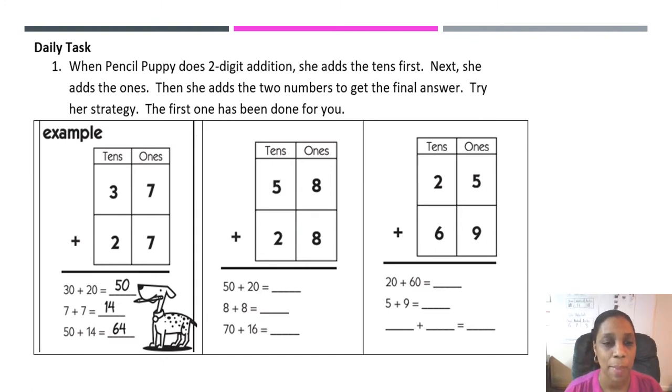Anytime I read a problem, I like to always go back and reread it a second time so I can find any key details or information. When Pencil Puppy does two-digit addition, I think that's important, so I'm going to highlight that. So I know she's using addition, two-digit addition.